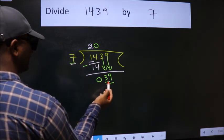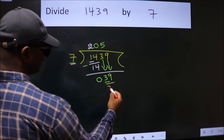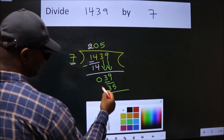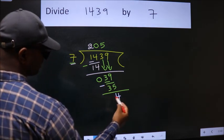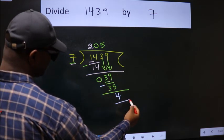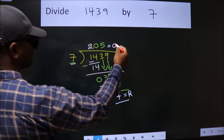A number close to 39 in 7 table is 7 fives 35. Now we subtract. We get 4. No more numbers to bring it down, so we stop here. This is our remainder. This is our quotient.